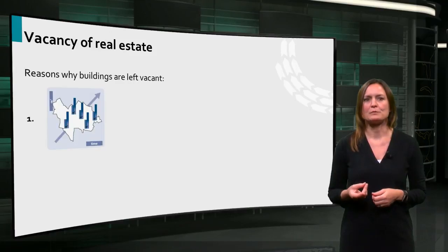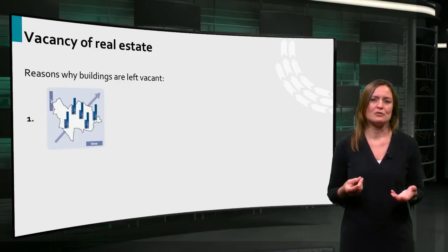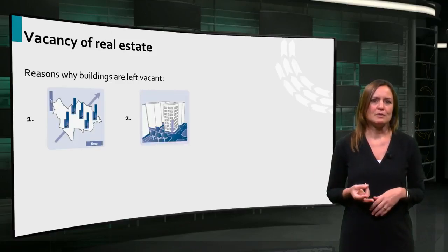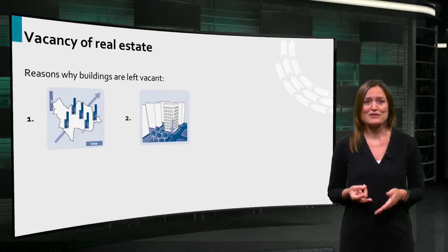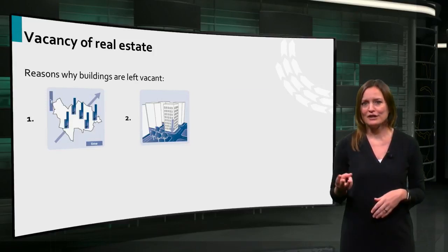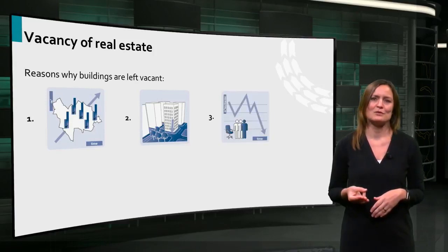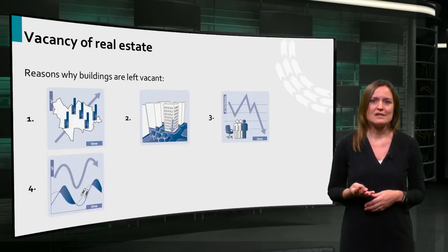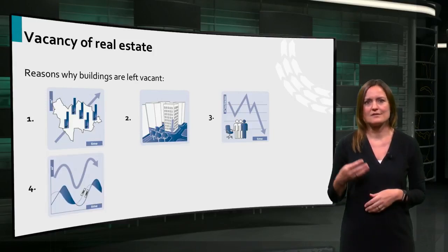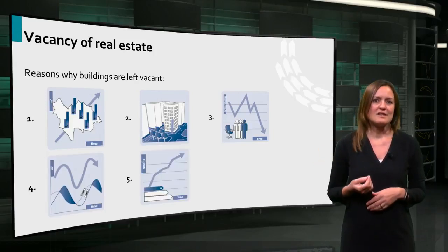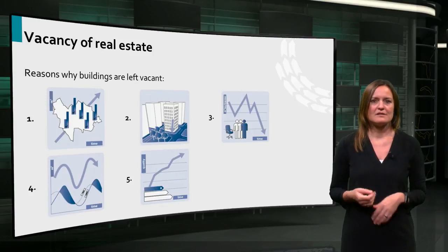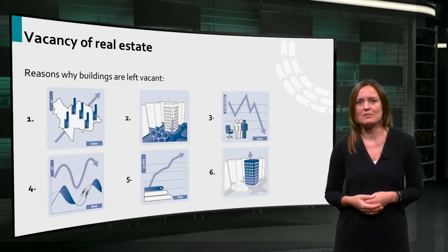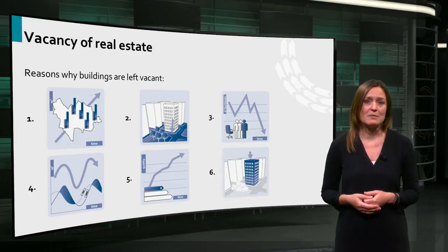1. Overproduction due to speculation. 2. Urban development and changing land use. 3. Spatial use decrease. 4. Changing real estate cycles. 5. Increasing quality demand. 6. Because the quality of existing buildings lags behind.